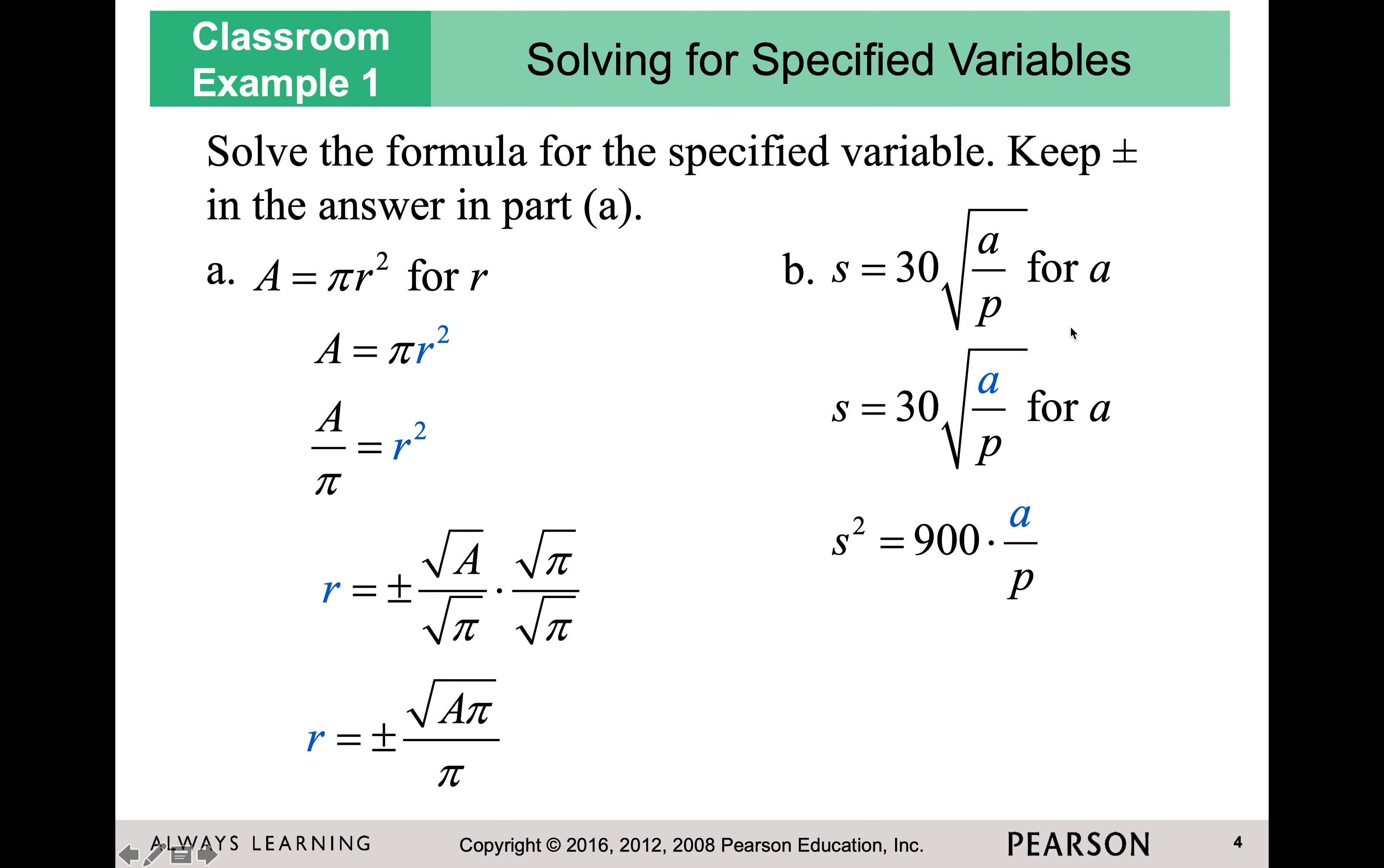So I square both sides. And when you square it, you're squaring 30 and the square root. So 30 squared is 900. The square of the square root cancels. And then I have s squared. So to get rid of p, I'm going to multiply both sides by p. And then to get rid of the 900, I'm going to divide. And that is solving that formula for a.